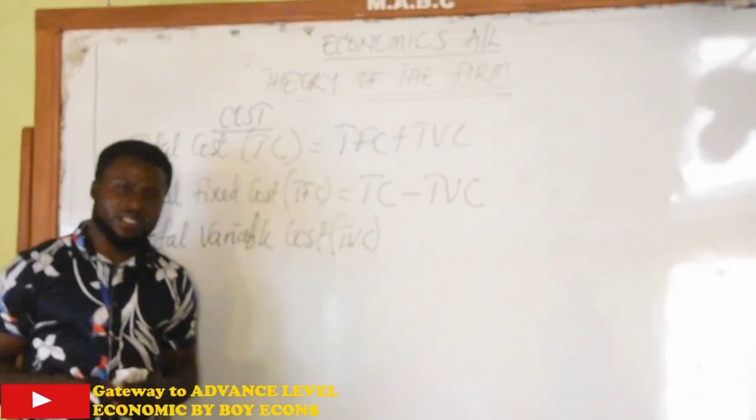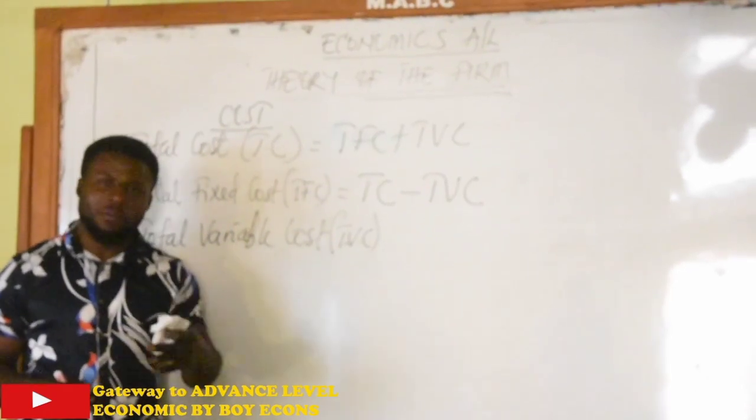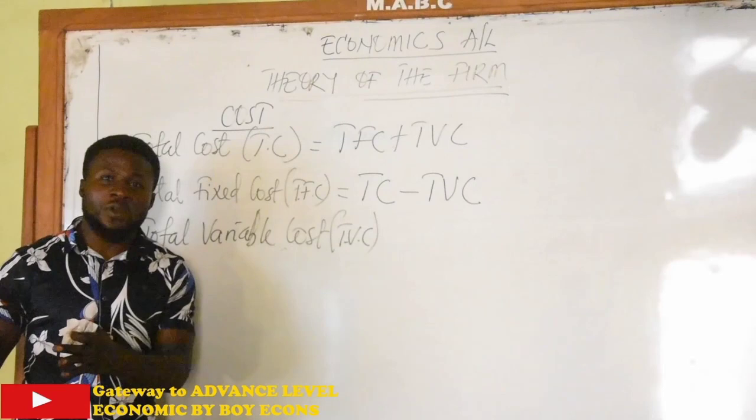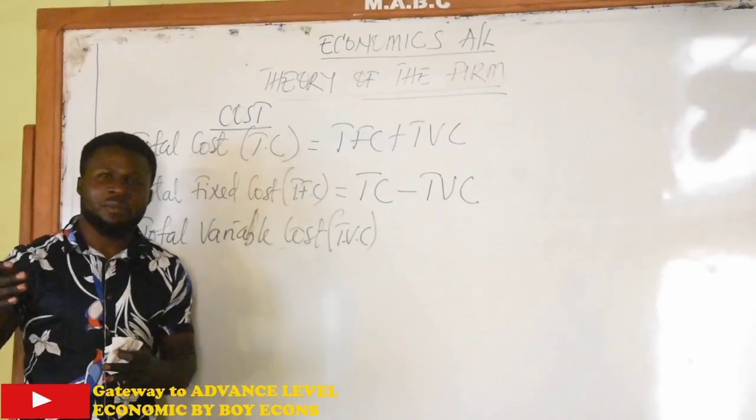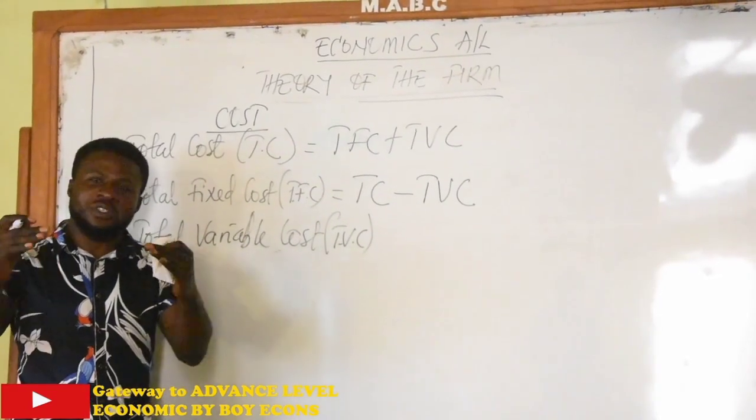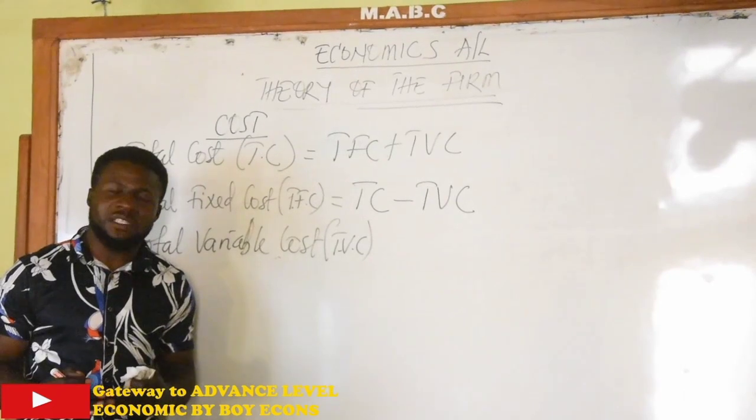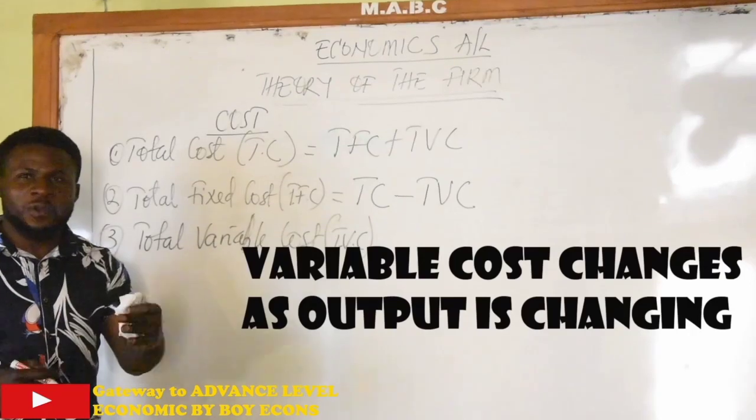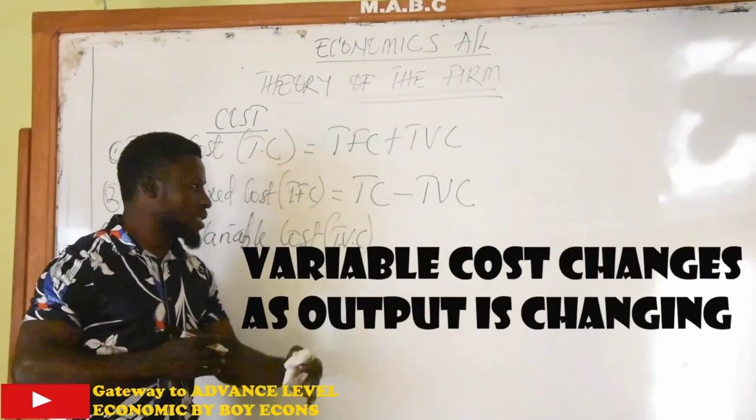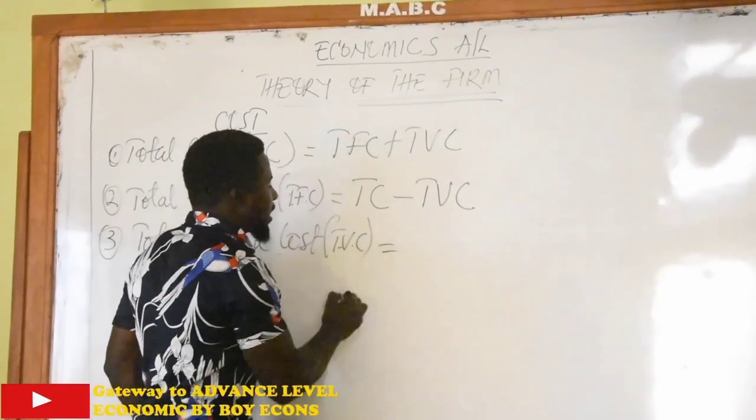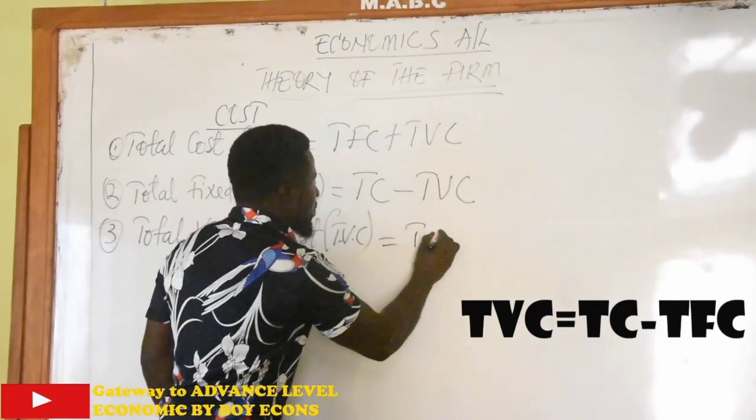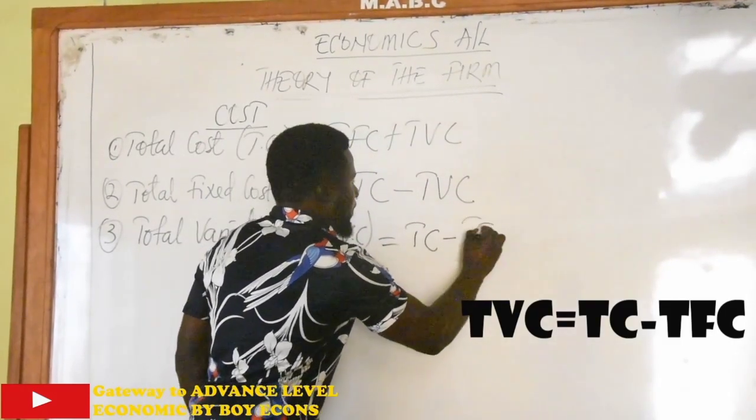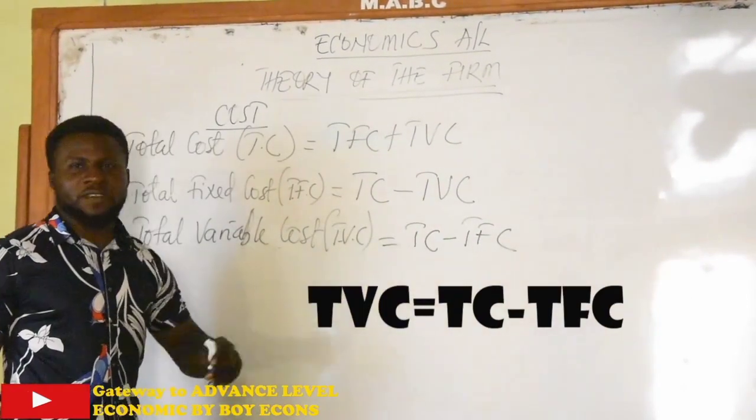Such as what? Transportation, electricity, water bills, labor. If we must produce more goods and services, we must hire more labor. If we want to produce fewer goods or lesser goods and services, we should hire a lesser amount of labor. So variable cost changes as output is changing. And it is simply calculated as total cost minus total fixed cost: TVC = TC - TFC.